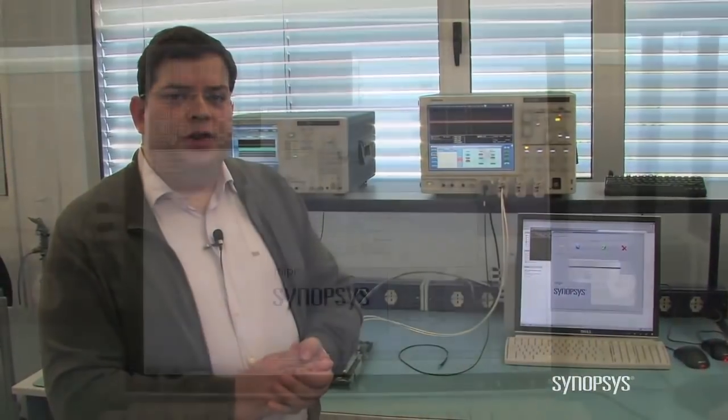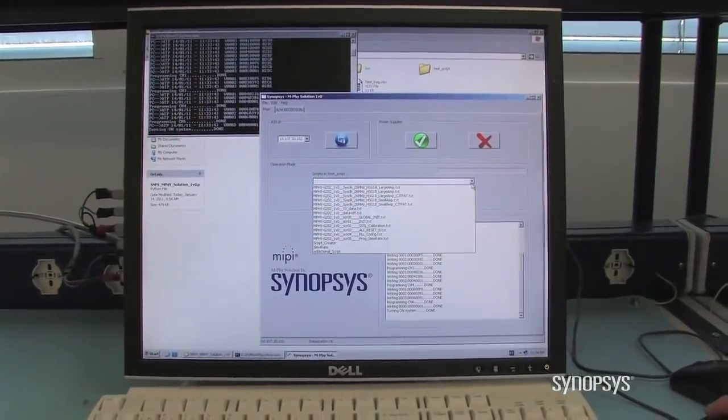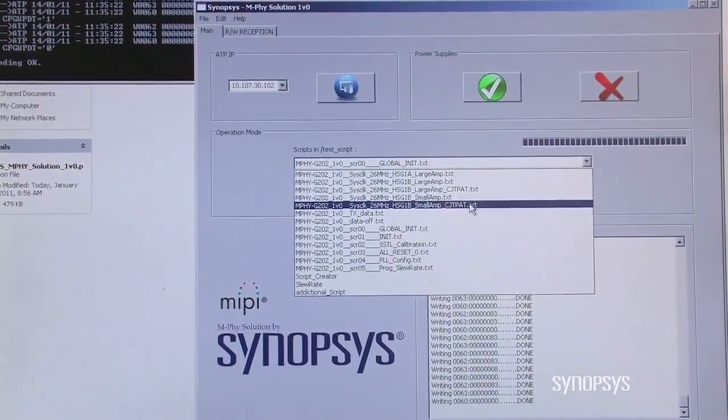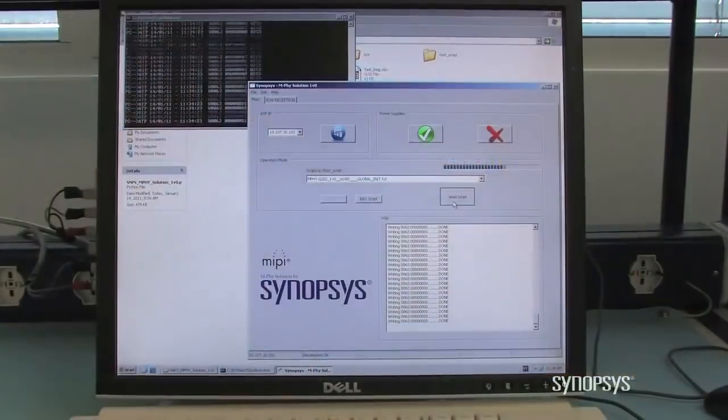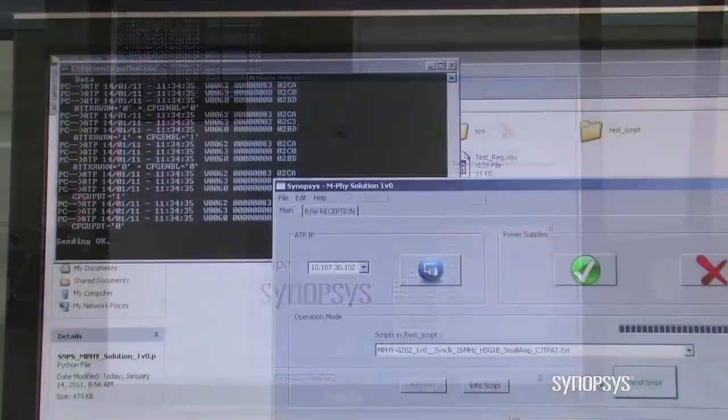After configuring the board, I will now start emulating high-speed Gear 1 transmission at 1.456 Gbps and will be measuring the eye diagram in two different configurations: small and large amplitude.